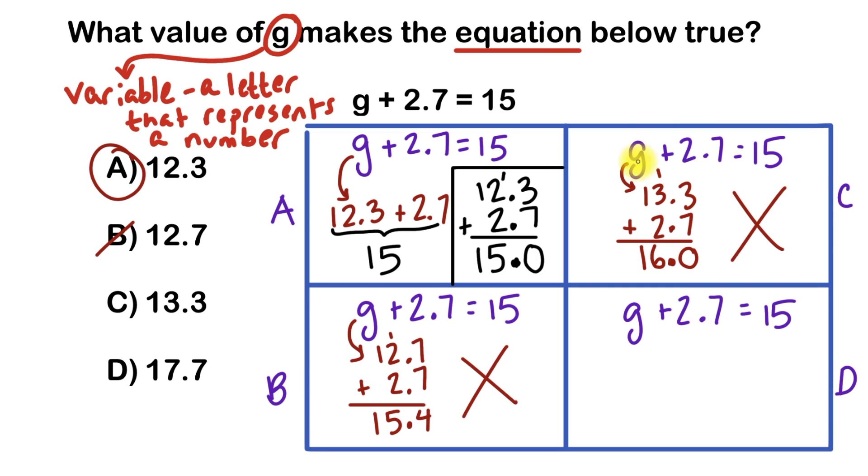Because remember, we're looking to make 15 when we use a value for G. And next we'll go to choice D. And for choice D, we're saying the answer for G is 17.7. So where I see G, I'll put 17.7.